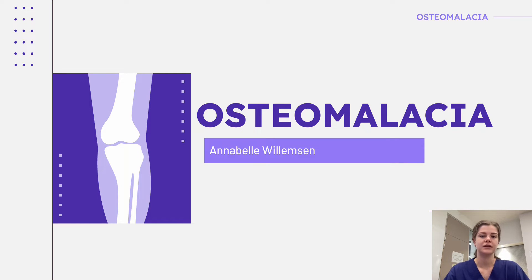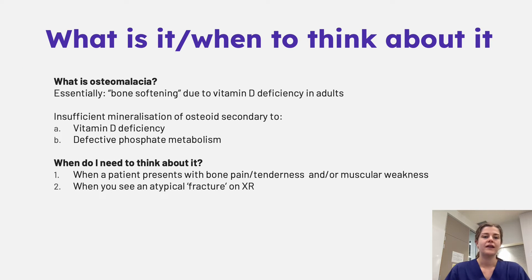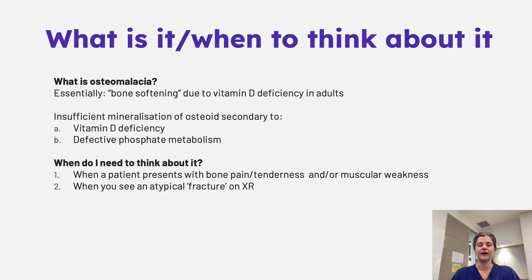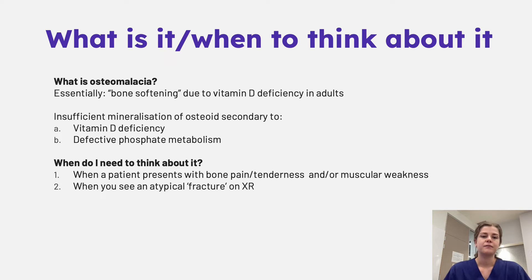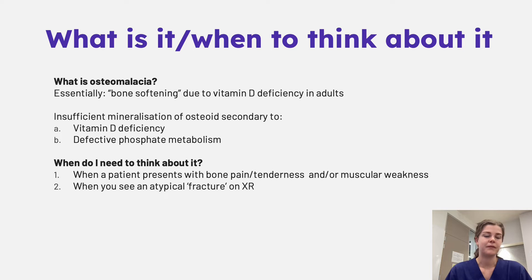Today I'm going to be talking about osteomalacia, which is also related to vitamin D deficiency like rickets. Osteomalacia, in its simplest form, is bone softening due to vitamin D deficiency. This occurs mostly in adults, but it can also occur in children. You get insufficient mineralisation of the osteoid, secondary to vitamin D deficiency or defective phosphate metabolism.